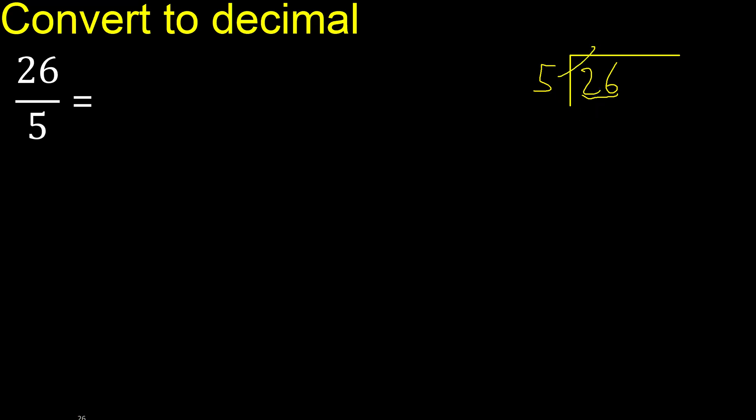5 multiplied by which number is nearest to 26 but not greater? 5 multiplied by 6 is 30 — 30 is greater. 5 multiplied by 5 is 25. 25 is not greater. 26 minus 25 is 1. Next, there is no number.